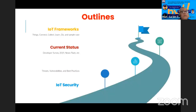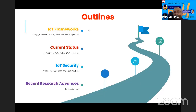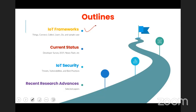So let's see what I'm going to present today. First I will start from the easiest one — the IoT framework. Then we'll look at the current status from the developer survey of IoT, the newsflash and recent report, so we can get a feel for our current situation. After that, the main topic will be IoT security — threats, vulnerabilities, how we defend, and best practices. And the last part covers selected recent research papers on advances in IoT security.